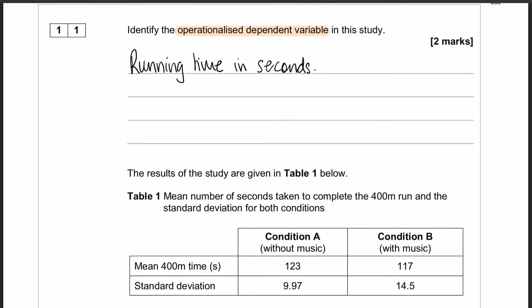For anyone who can't remember what operationalized means, it means how they made it measurable. The thing that they're measuring is the running time; the way that they are measuring it is in seconds. That's what makes it measurable. Your first mark comes from identifying running time, the second mark comes from identifying in seconds.